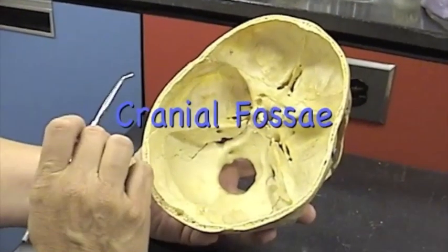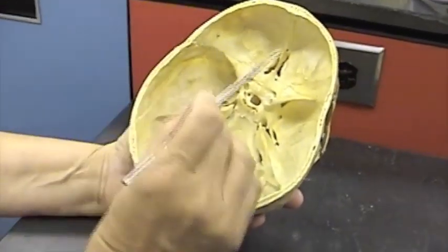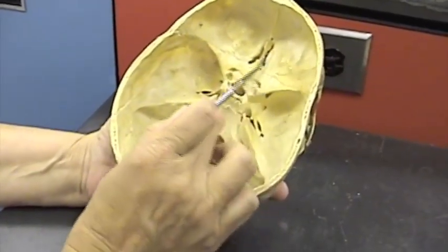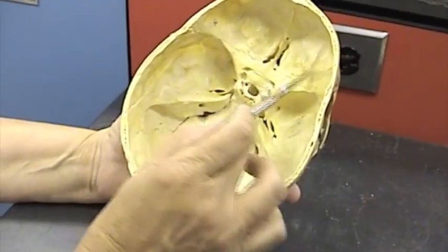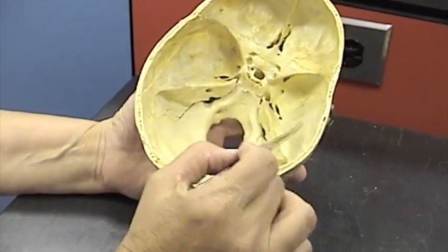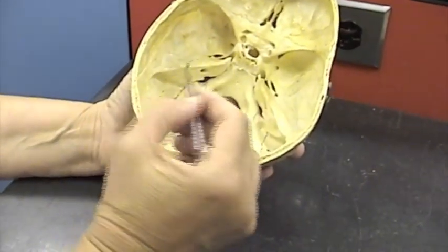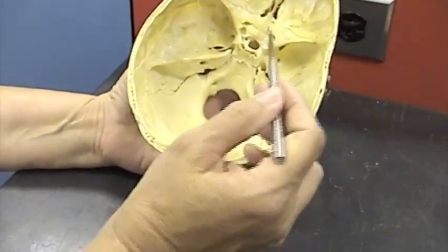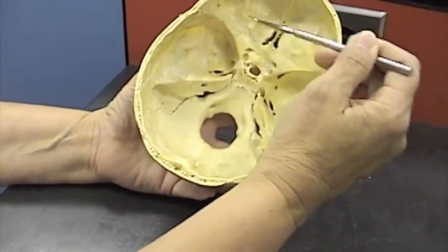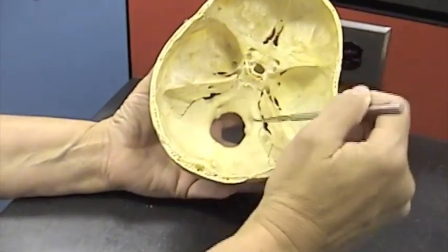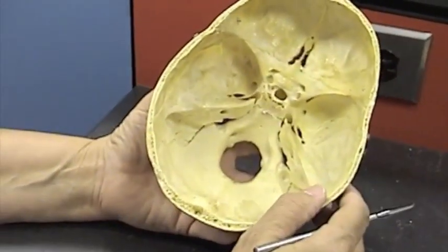The floor of the cranium has three general depressed areas. Here is the anterior fossa, which houses part of the brain. Here are the middle fossa and here is the posterior fossa. You can get a sense of how this depression sinks a little lower and then a little lower here for other lobes of the brain.